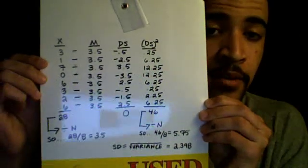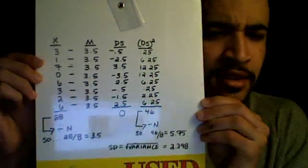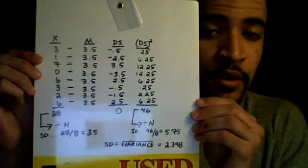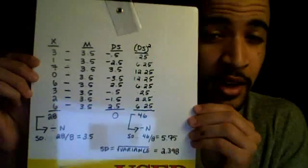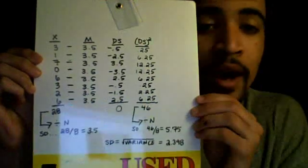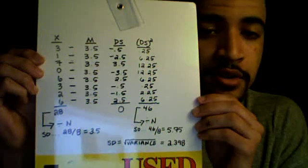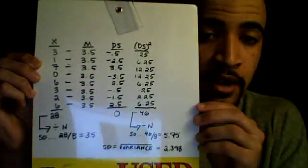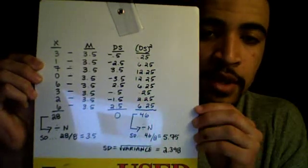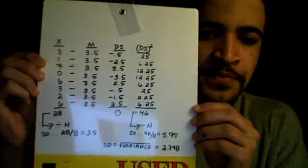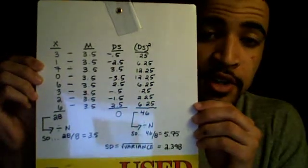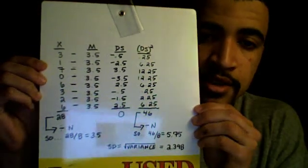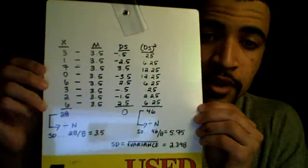Beginning with the first column labeled X — X is simply the raw scores presented to you in any problem. Whether it's a problem asking you how many cookies Bobby Joe has eaten or how many cups of juice Jill drank, it doesn't matter what the problem is asking. It's really just the numbers you need to be concerned about. So the raw scores are 3, 1, 7, 0, 6, 3, 2, and 6.